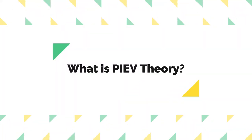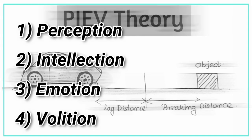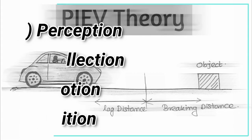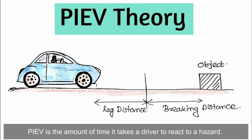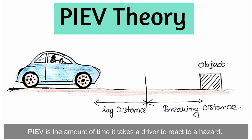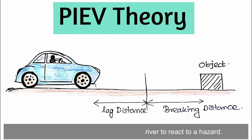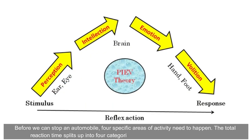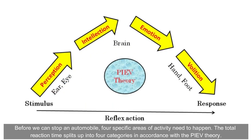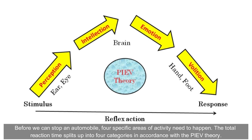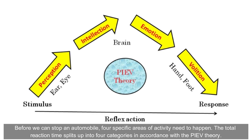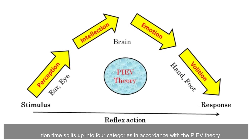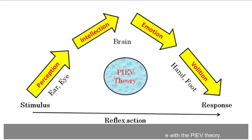PIV theory stands for: Perception, Intellection, Emotion, and Volition. PIV is the amount of time it takes a driver to react to a hazard. Before we stop an automobile, four specific areas of activity need to happen. The total reaction time splits into four categories in accordance with the PIV theory.